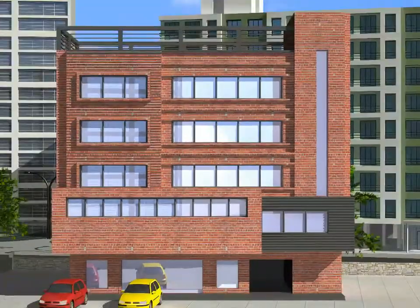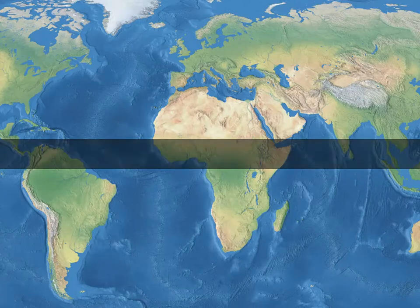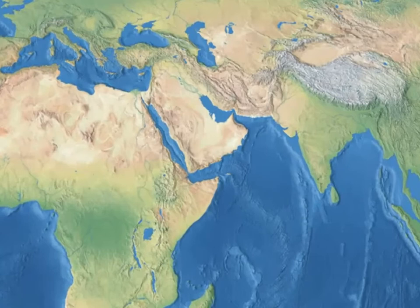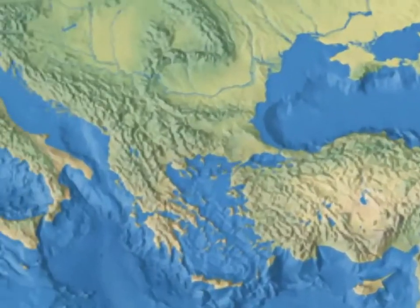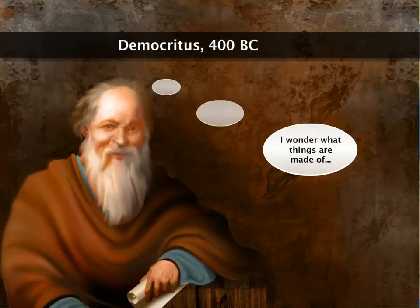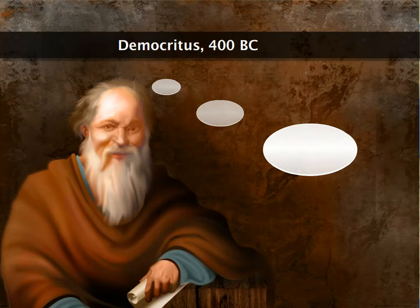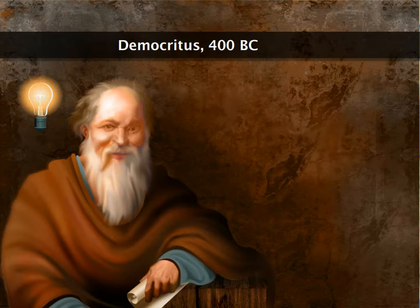When were atoms discovered, and by whom? The concept of atoms was first thought of by philosophers in ancient India around 500 BC. Then in 400 BC, Democritus, an ancient Greek philosopher, claimed that everything is made up of small particles that cannot be seen by the human eye. He called these particles atoms. Atom means uncuttable, so Democritus proposed that atoms cannot be cut into smaller pieces.